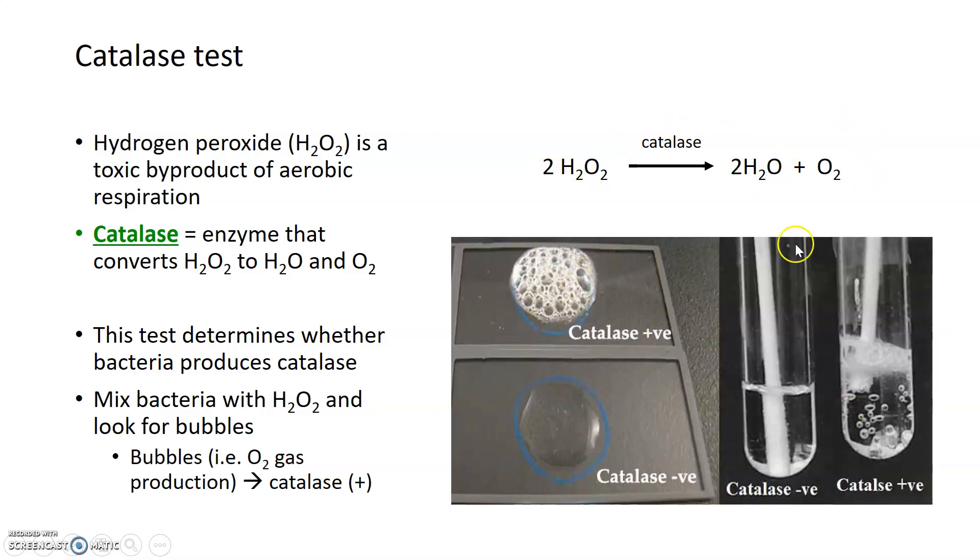Here you can see the results of a catalase test. What I mean by bubbles can be seen on the top slide here, as well as in the right-hand test tube. You can see a large amount of oxygen gas being produced by the catalase that's in these bacterial samples. These would be deemed catalase positive. If you don't see any production of gas bubbles or O2 gas, as you see on the bottom slide, or in the left-hand test tube, those organisms would be considered catalase negative.